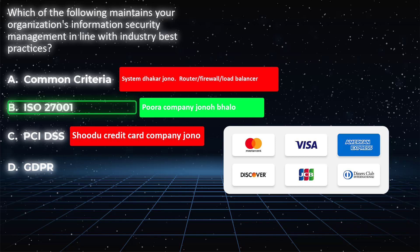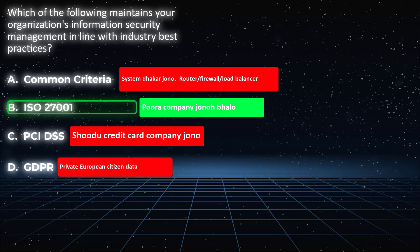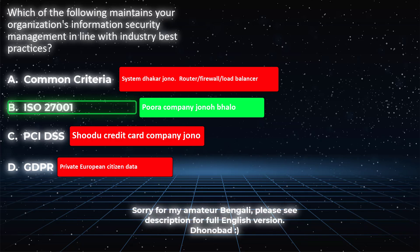Choice C, PCI DSS, is about handling credit card information securely — credit card numbers and private data. Choice D is GDPR — General Data Protection Regulation. GDPR is about securing private information. GDPR applies to European citizens: their personal information, their name, passport number, blood type, email address — all private data. So Choice D is about European citizen private data security, not general company security.